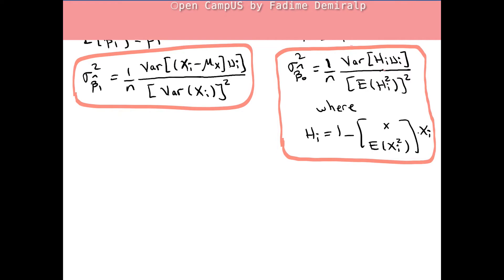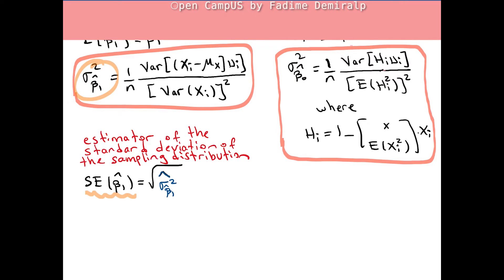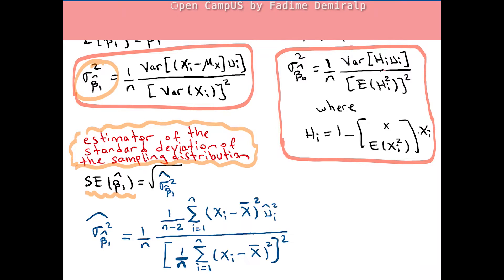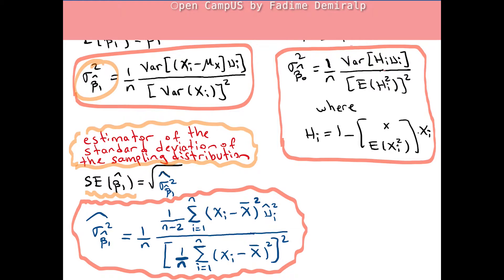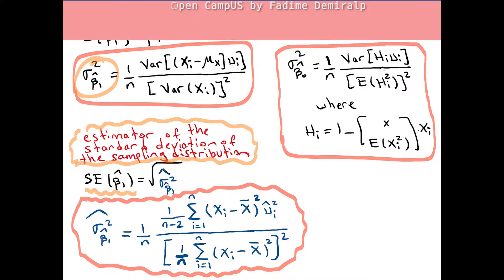The standard error of β₁-hat is the square root of the estimator of the variance. It is an estimator of the standard deviation of the sampling distribution. The estimator of the variance is given by this formula. For a homework question you will need to use this formula for standard error calculation, but in applications the standard error is computed by software. For example, if you are given the sample size N and the sum of squares of xᵢ from the mean x̄ in the denominator...